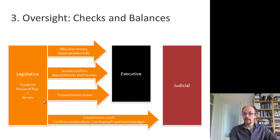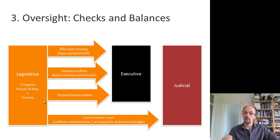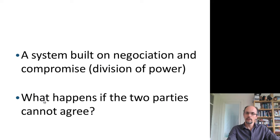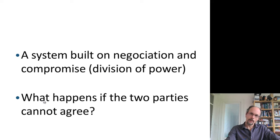These are the ways in which Congress can interact with the other two branches. We'll see that there are arrows going from the executive to the legislative and judicial branches, including the veto power which we've briefly mentioned. So this is a system built on negotiation and compromise in Congress and between the branches.